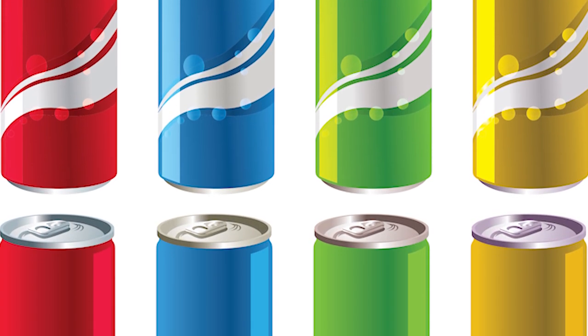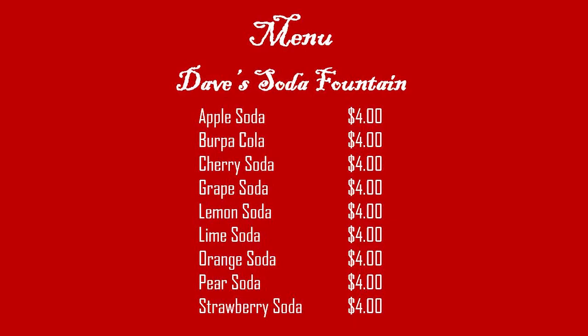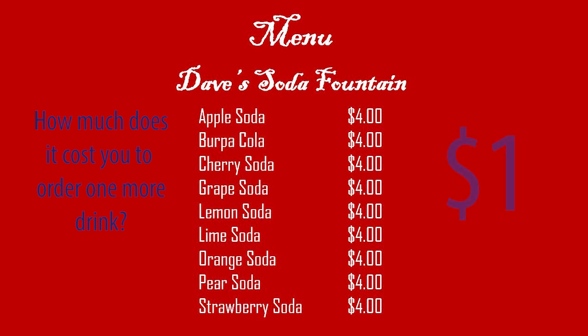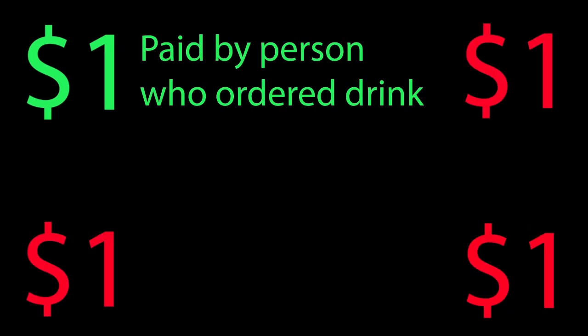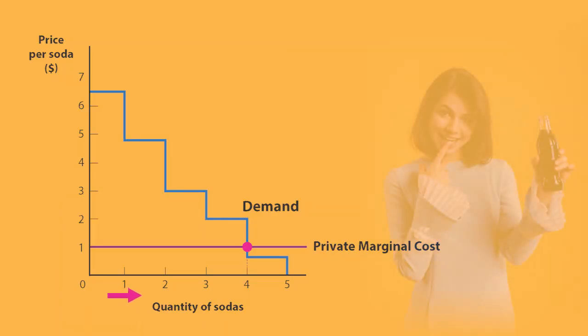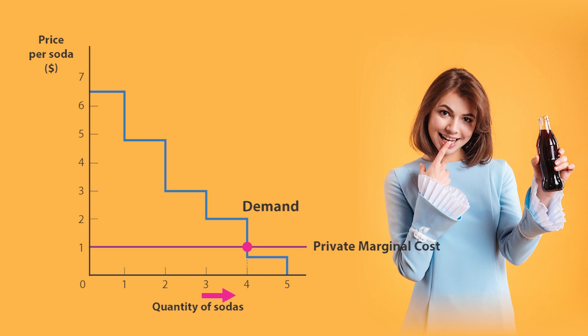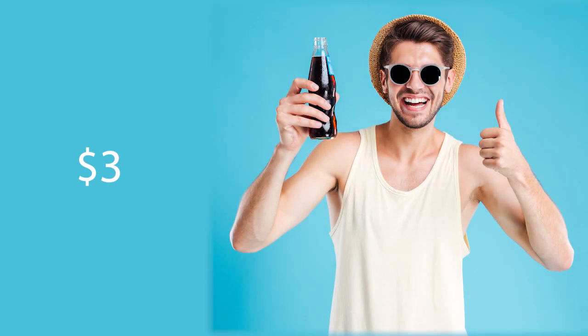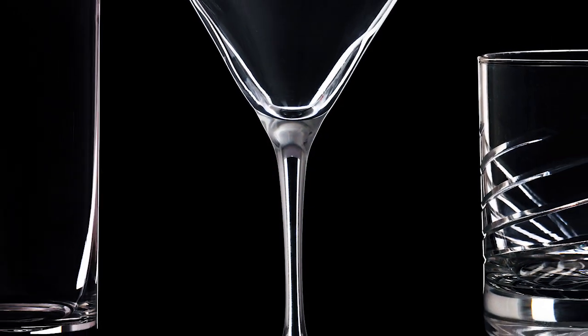For a quick review, suppose you and three friends go out for sodas and agree to split the check evenly among the four of you. If drinks cost $4 each, how much does it cost any particular person to order one more drink? It costs $1, because a $4 purchase increases each person's bill by $1. The $3 not paid by the person whose drink it is constitutes an externality imposed on the other three friends. People will order more sodas until their benefit from another soda falls below their private marginal cost of $1, even though the cost to the group is $4.